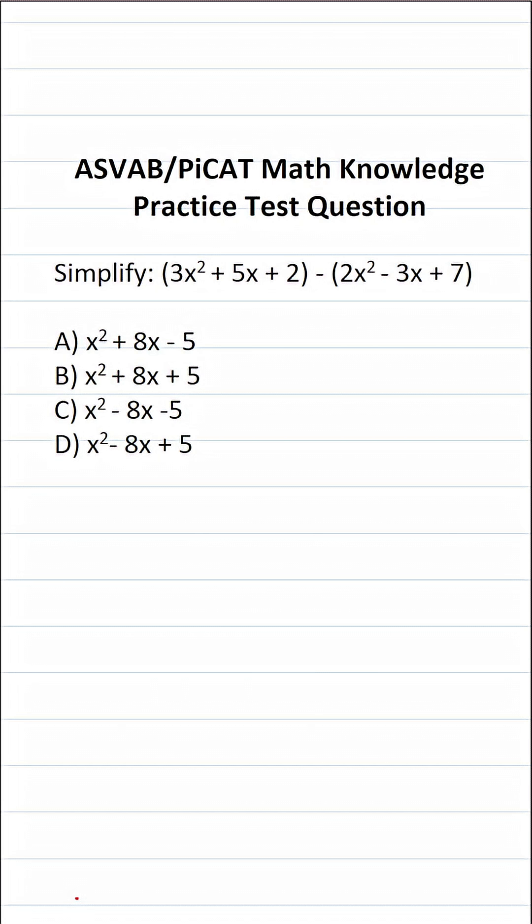This math knowledge practice test question for the ASVAB and PiCAT says simplify 3x squared plus 5x plus 2 minus 2x squared minus 3x plus 7.